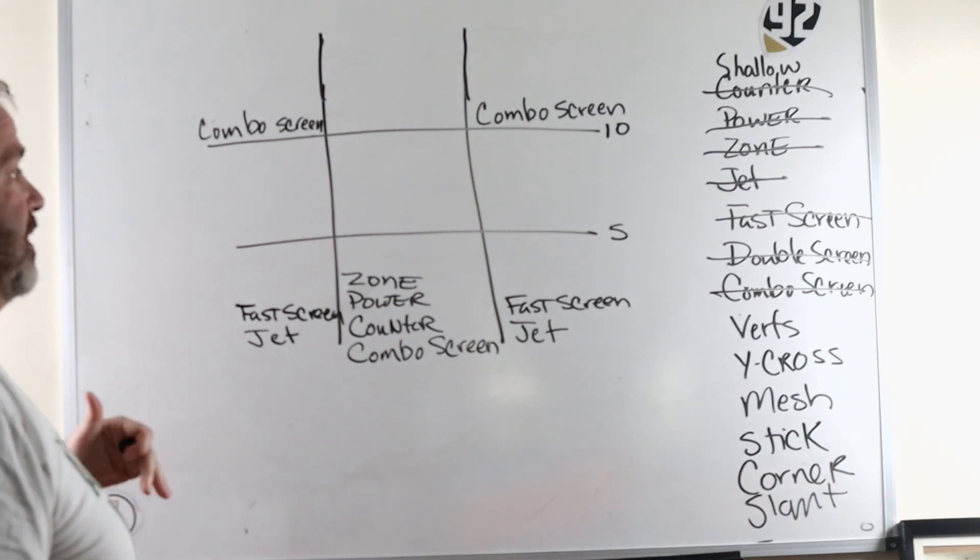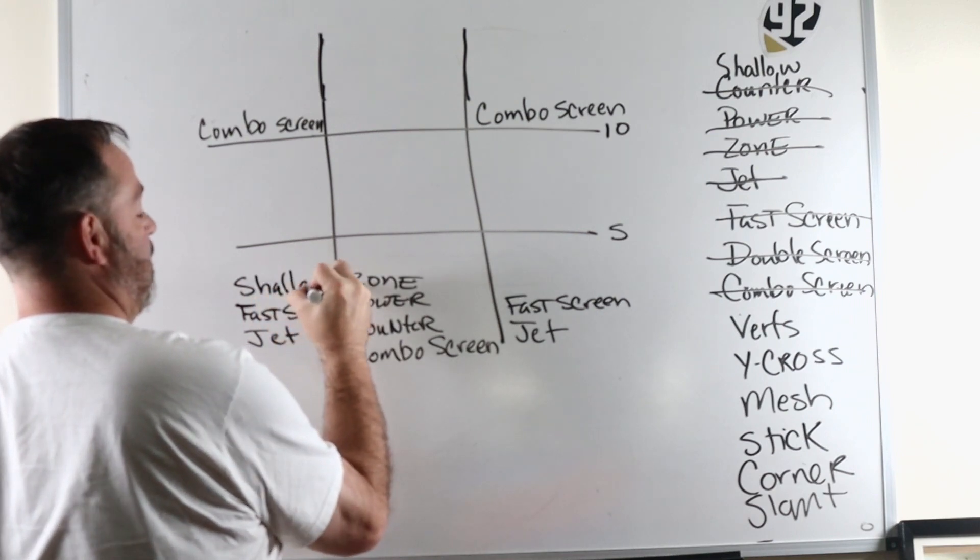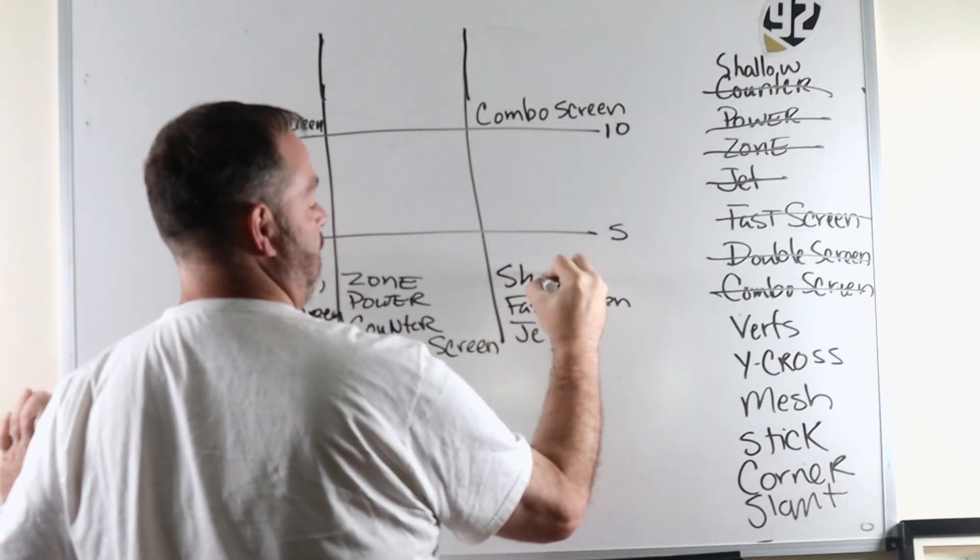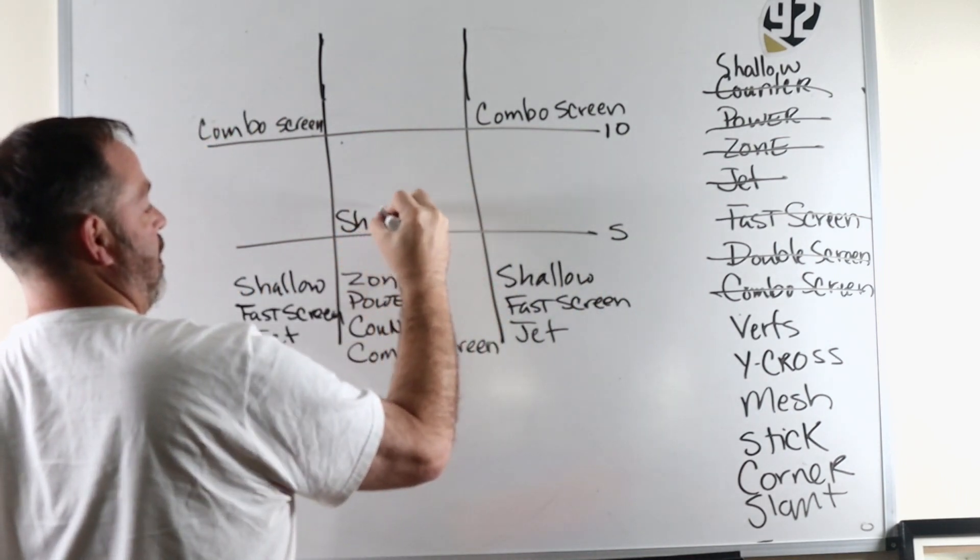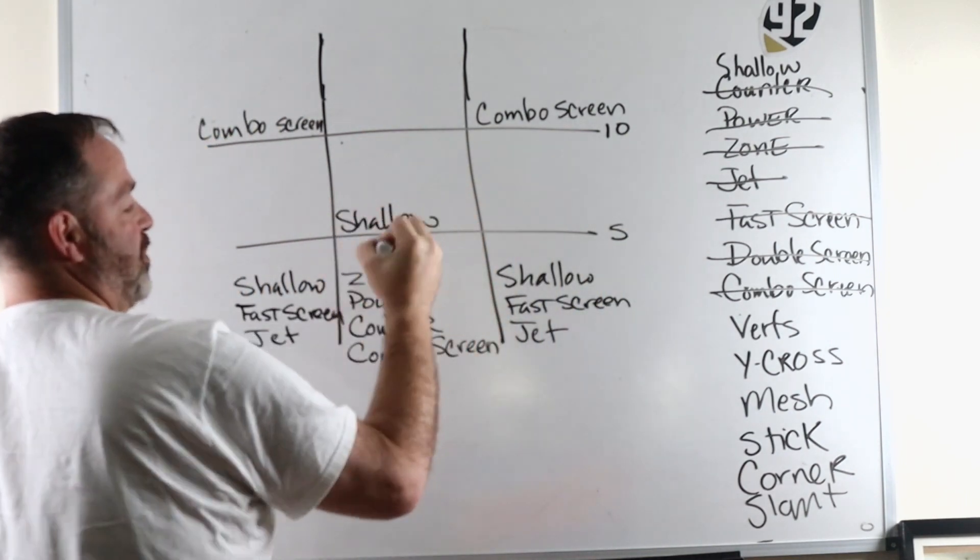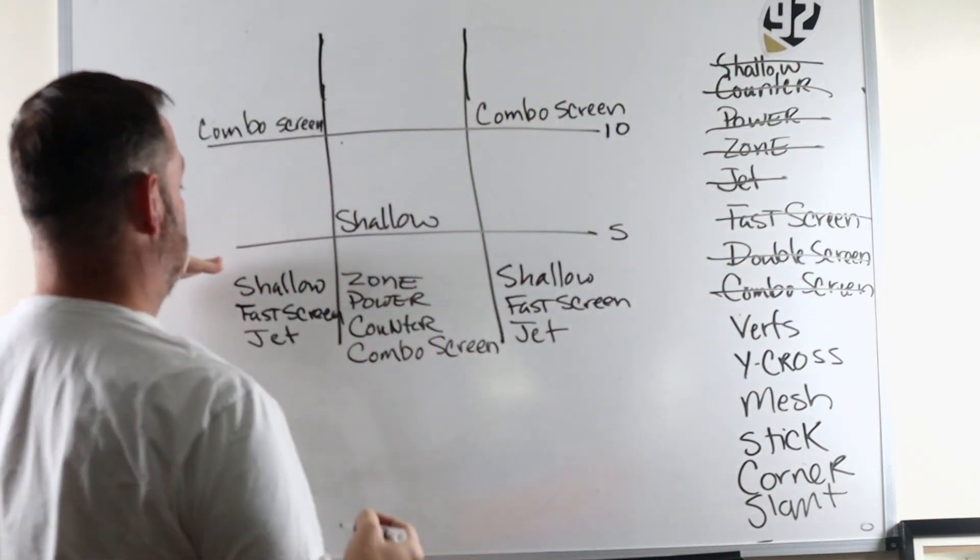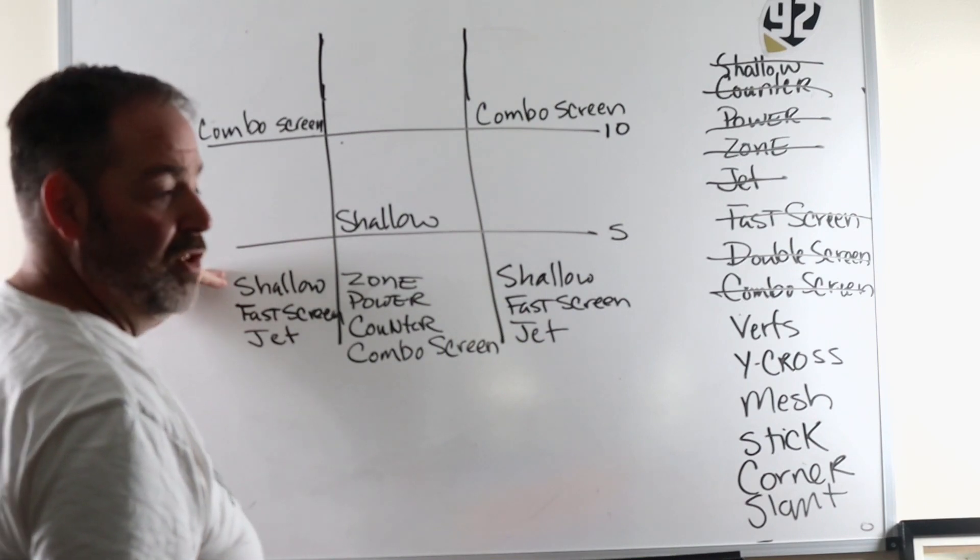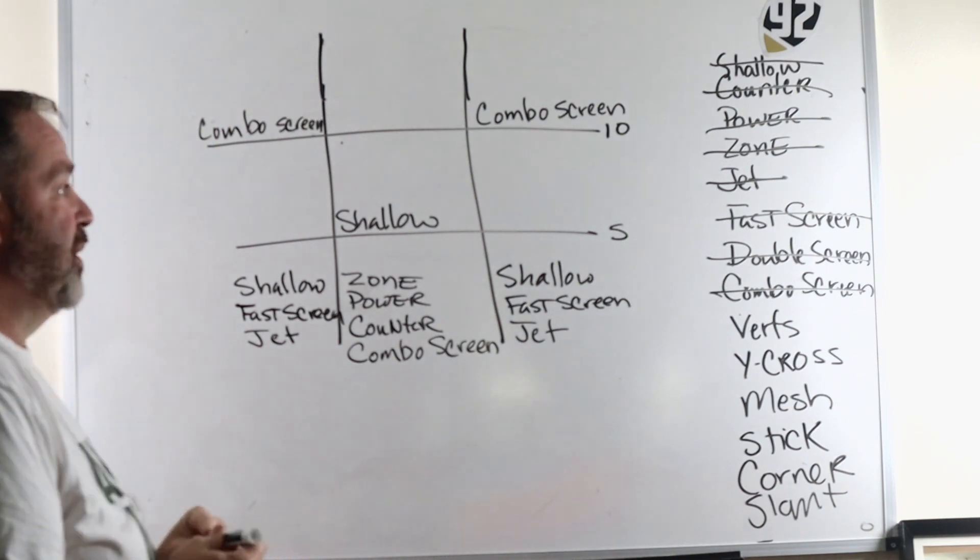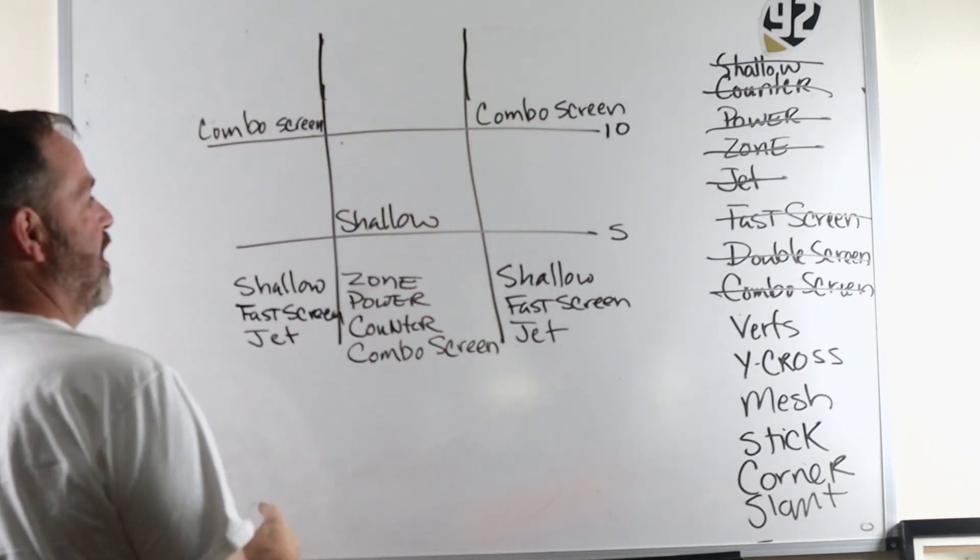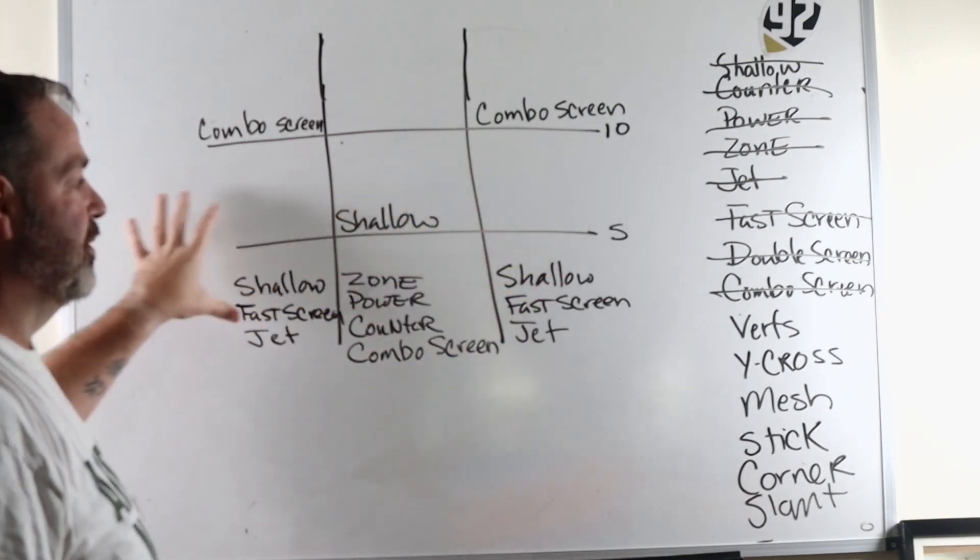Now, where does everything else hit? Well, shallow is going to hit in here. And this would be the dig concept off of shallow. We do have the quick five, and then you also have the grass post, bang a grass post. So it can hit here or here as well, but we're just going to leave that off for right now because these are the primary areas that we want shallow to attack.